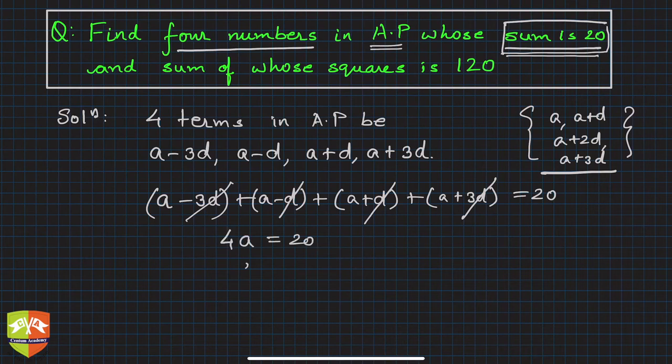You eliminated one variable and now you know one variable at least, that is a. Now it will be very easy from the second relationship to find out d, and hence you will be able to find out the entire AP.